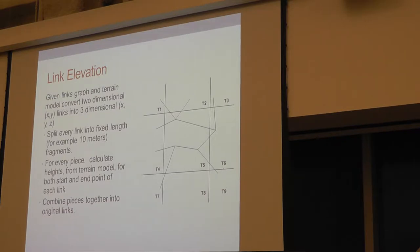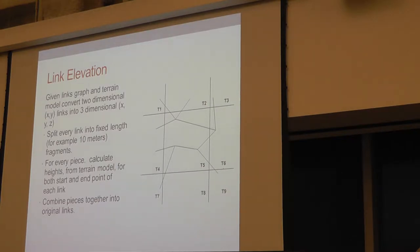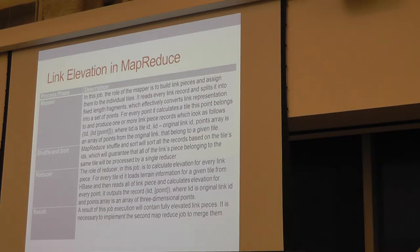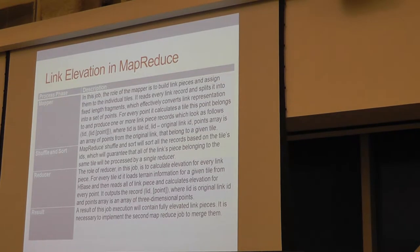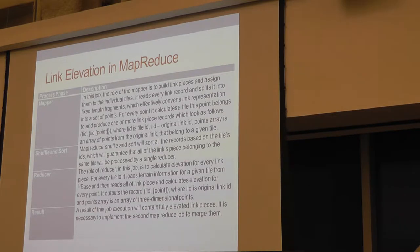This is how it can be done in MapReduce. You read through all the links — all links belonging to the same square get the same key. Then you start elevating them. The problem is a single link can belong to more than one square, so at the end you have to merge the links. That's another problem — when you try to merge the links, they end up as completely separate segments.